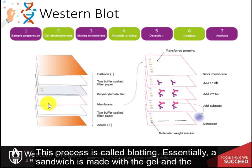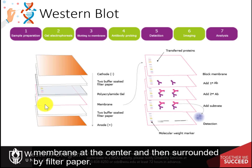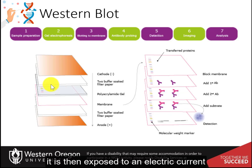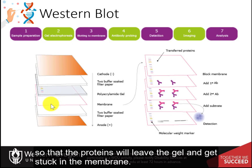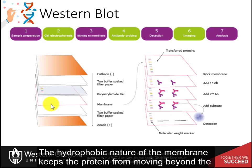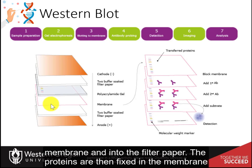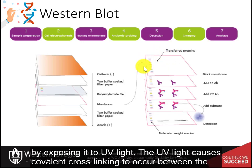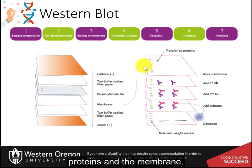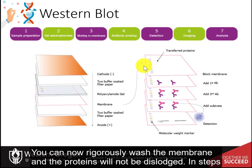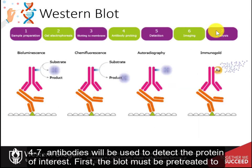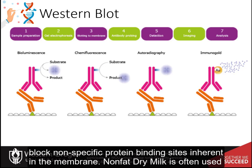Essentially, a sandwich is made with the gel and the membrane at the center, surrounded by filter paper. It is then exposed to an electric current so that the proteins leave the gel and get stuck in the membrane. The hydrophobic nature of the membrane keeps the proteins from moving beyond it and into the filter paper. The proteins are then fixed in the membrane by exposing it to UV light, which causes covalent cross-linking to occur between the proteins and the membrane. In steps four through seven, antibodies will be used to detect the protein of interest. First, the blot must be pre-treated to block non-specific protein binding sites inherent in the membrane — non-fat dry milk is often used for this purpose.